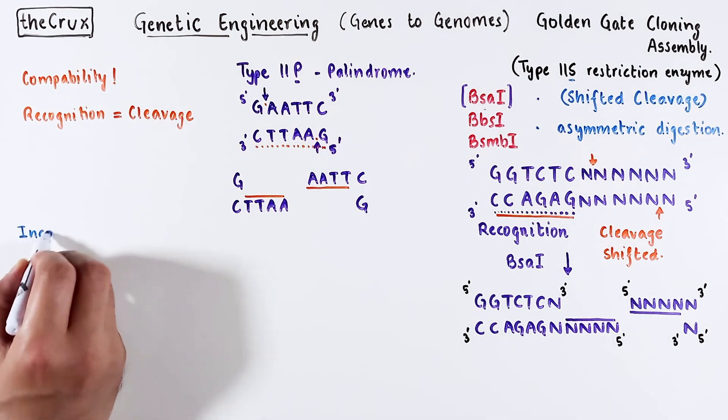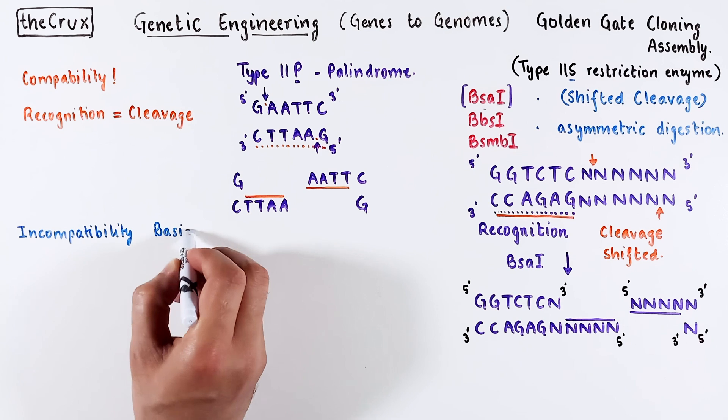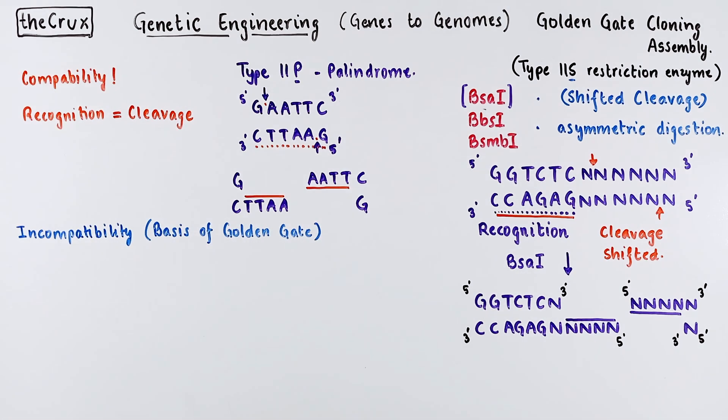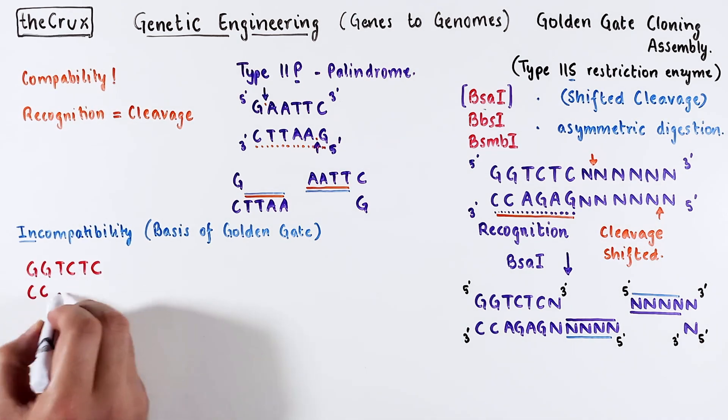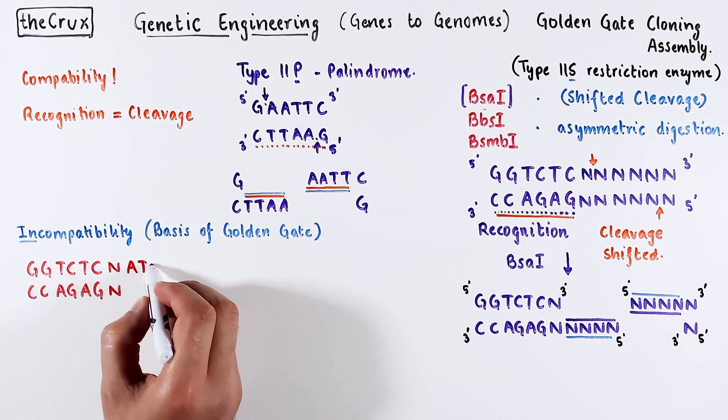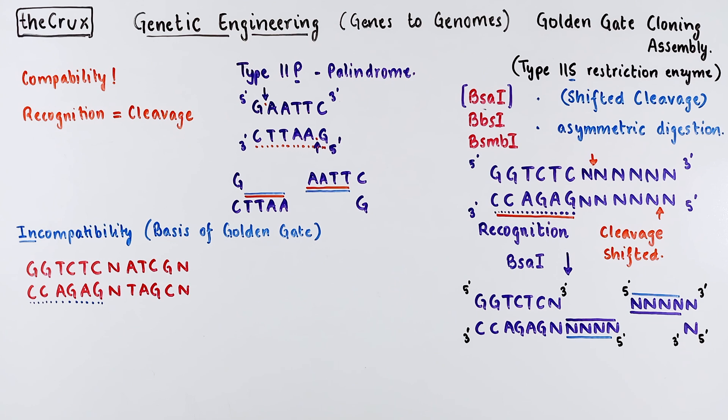Golden Gate cloning uses incompatibility of 2S enzymes. Let's see how this incompatibility develops. As I said, 2P enzymes are always specific, but if we take 2S enzymes, and here again let's use BSA1 as an example, and say this is the DNA where the cut is made, and following the cut you get sticky ends.